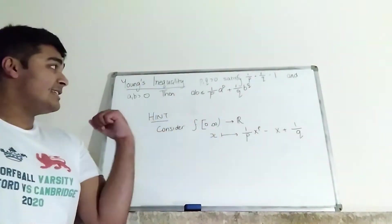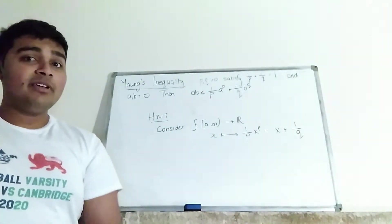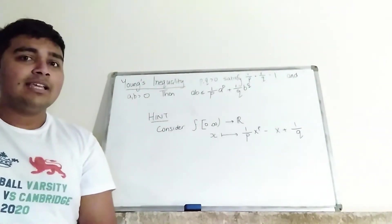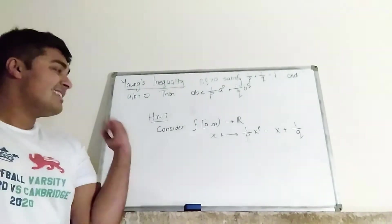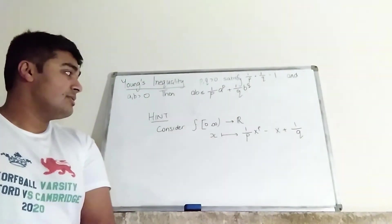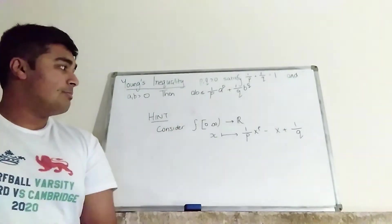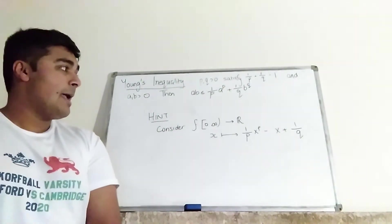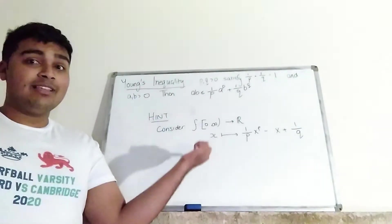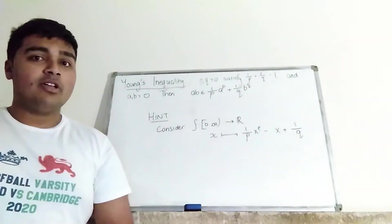Okay, so that's Young's inequality and then I'll get on to a proof for it. But if you want to try and prove it yourself, I've written down a hint here, sort of a starting point to see if you can prove it yourself. So the hint is this: Consider the function f from the non-negative reals to the reals, which maps x to the point 1 over P times x to the P minus x plus 1 over Q. Okay, so I'm going to be using this hint, in fact, to prove Young's inequality.